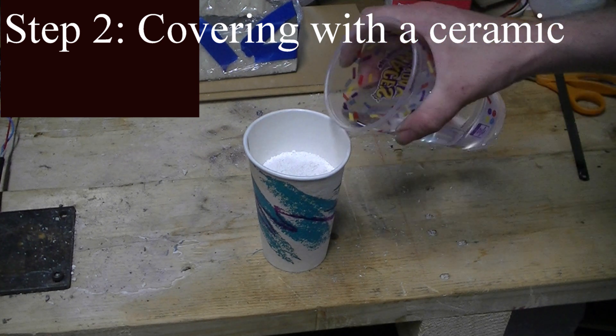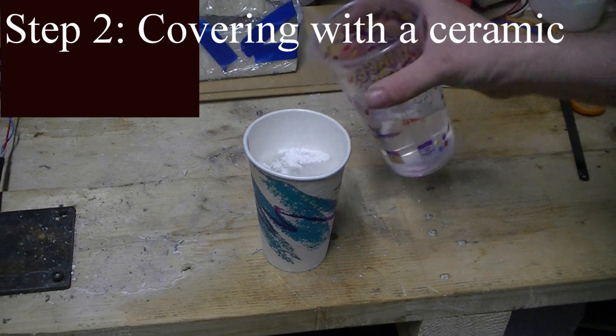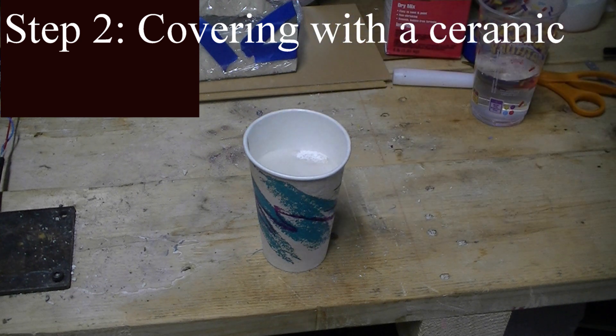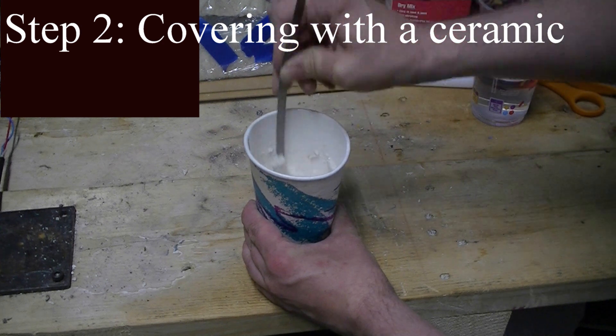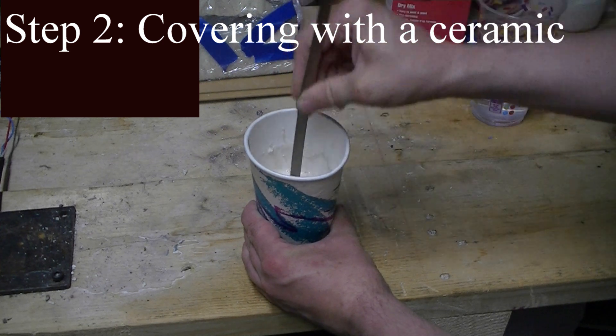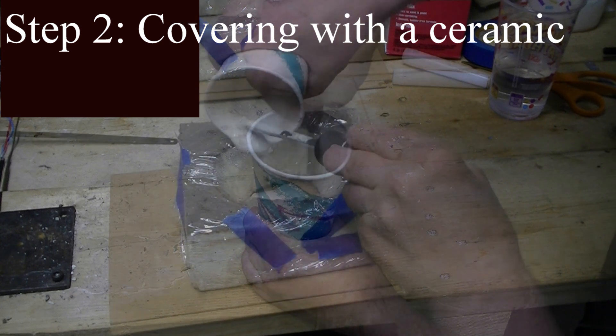When investment casting is performed in industry, there's typically a number of slurries, different types of ceramic used. There is a very fine slurry which initially coats the wax preform. Then they build a much coarser ceramic on top.